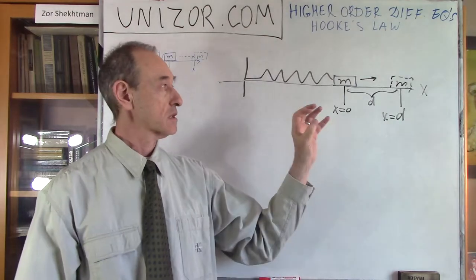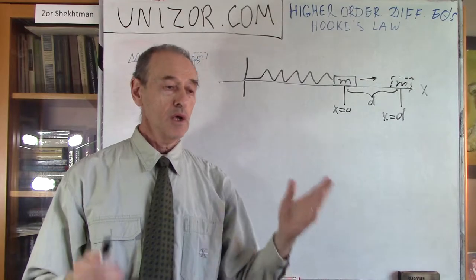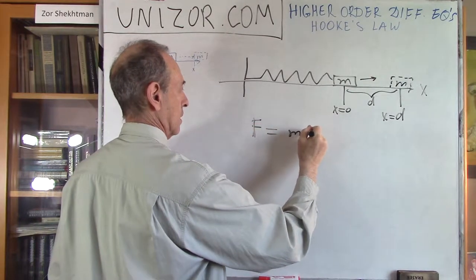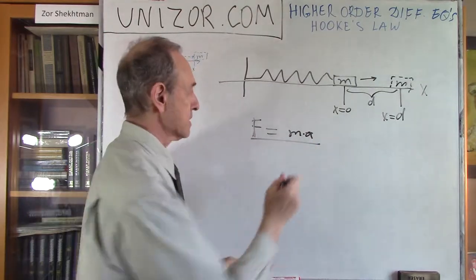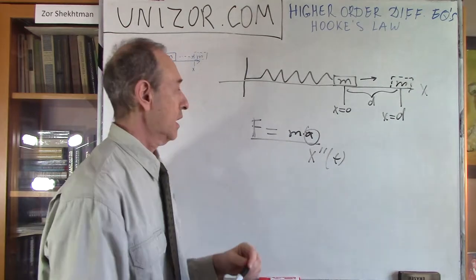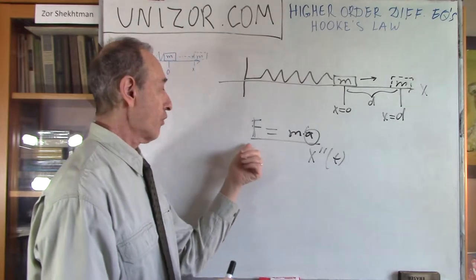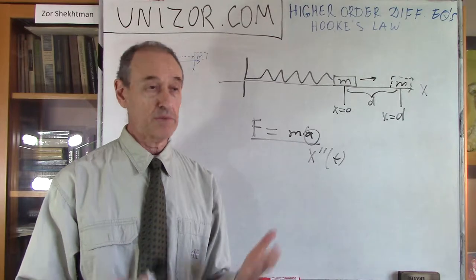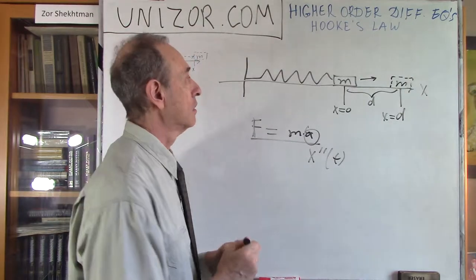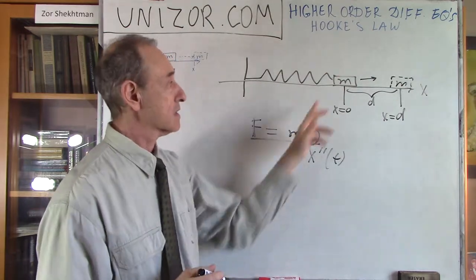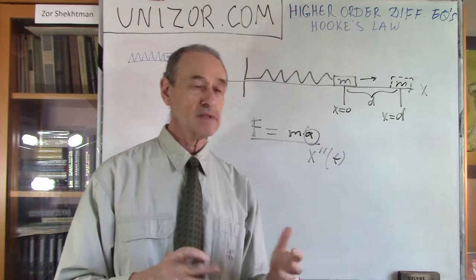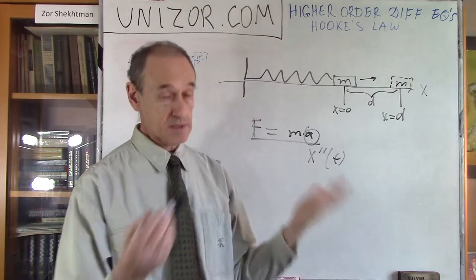The question is what happens next if we just let it go from this point. First of all, we know the equation: force equals mass times acceleration. Acceleration is the second derivative of the x coordinate by time. Mass is fixed. But the force f is not a fixed force — it doesn't depend directly on time, because we don't really know how it depends on time. We do know the experimental Hooke's law, which says that the force is proportional to the distance we have stretched our spring.